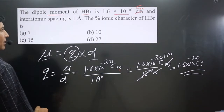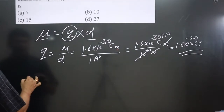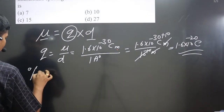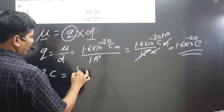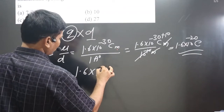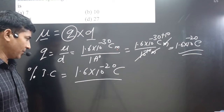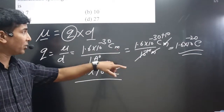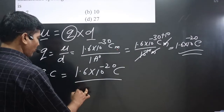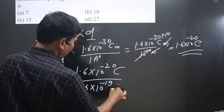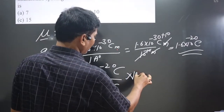Now apply the percentage ionic character formula. Percentage ionic character equals the charge value we calculated — 1.6 multiplied by 10 to the power minus 20 coulombs — divided by the charge of the electron, which is 1.6 multiplied by 10 to the power minus 19 coulombs, multiplied by 100 to get the percentage value.